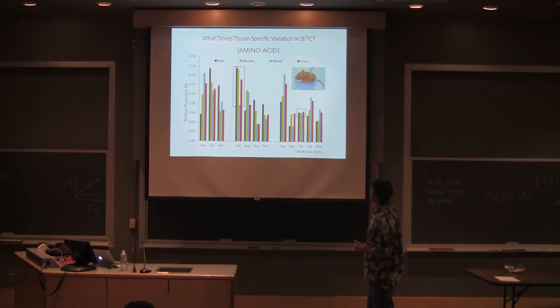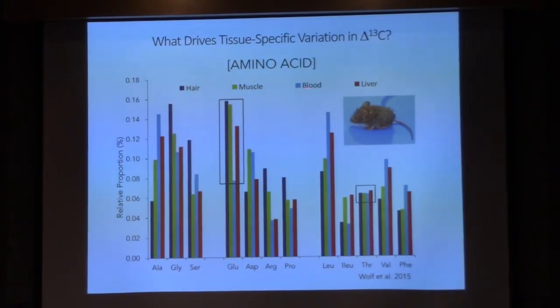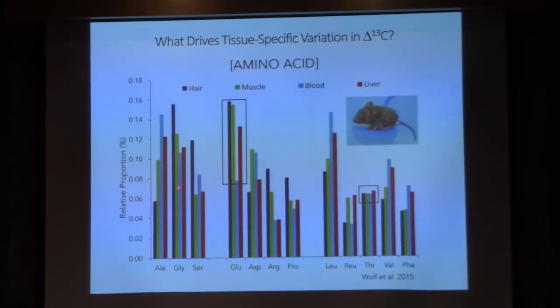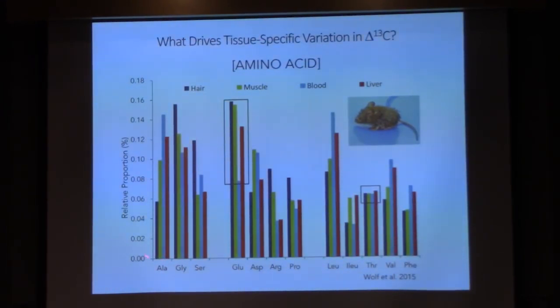So if you look at this, this is just some data from a paper that we published a few years ago. These are four different tissues that are commonly analyzed in ecology, and these are the amino acid compositions, concentrations here. I'm not talking about isotopes, concentrations for the different amino acids that we can measure. Some of them have wildly different concentrations among tissues like glutamic. Other ones, some of these essentials like threonine, don't really vary across tissues.